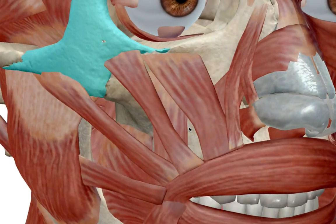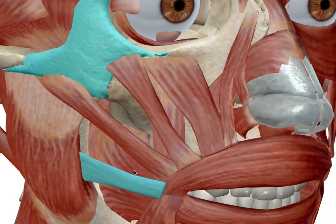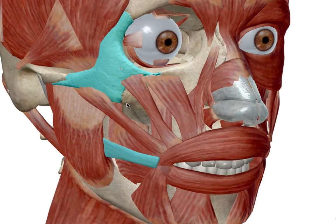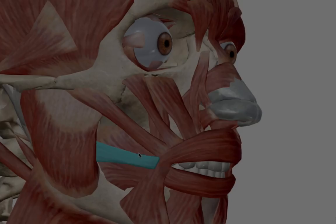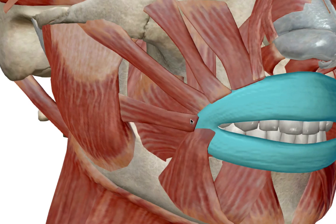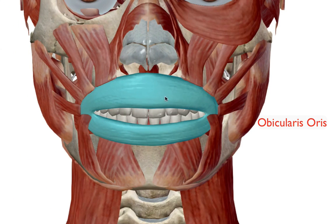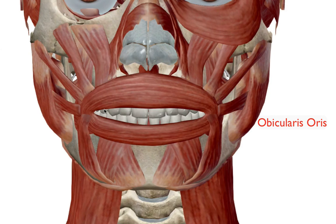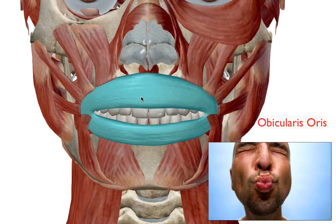Now let's look at one muscle responsible for your laughing. Just below your zygomaticus major, you have your risorius muscle, which makes your smile and laugh more complete. Staying near our mouth and moving medially to our lips, this is our orbicularis oris. Just like the orbicularis oculi, these muscles are in a circular shape and are responsible for you puckering up — so when you're going to kiss somebody, you have your orbicularis oris to thank for that.